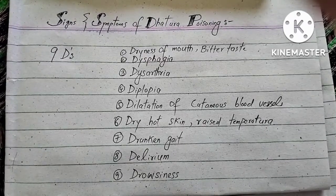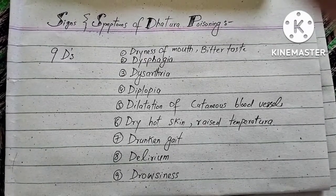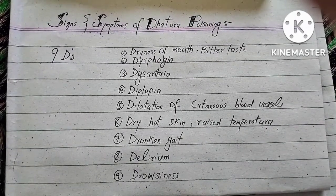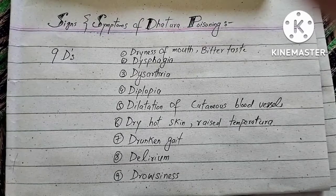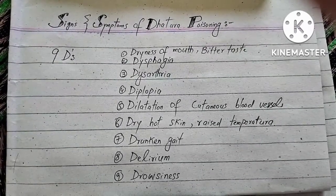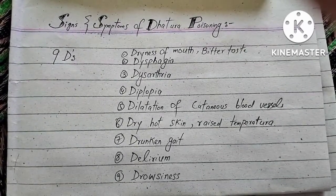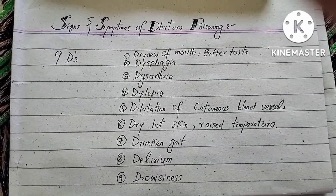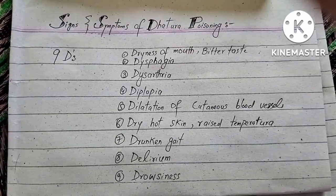Then there will be dysphagia, which means difficulty in swallowing. There will be dysarthria, which means difficulty in speech. There will be diplopia — double vision.